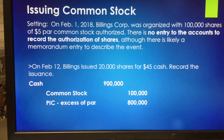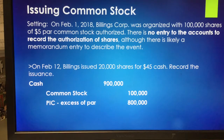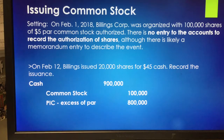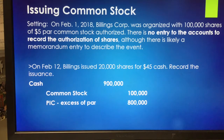On February 1st, 2018, Billings Corporation was organized with 100,000 shares of $5 par common stock authorized. There's no entry to the accounts to record the authorization of shares, but there may be a memorandum entry — a written description or explanation of some critical event, generally resulting from a decision of the board of directors. There are no debits and credits to be recorded here for the authorization of shares.